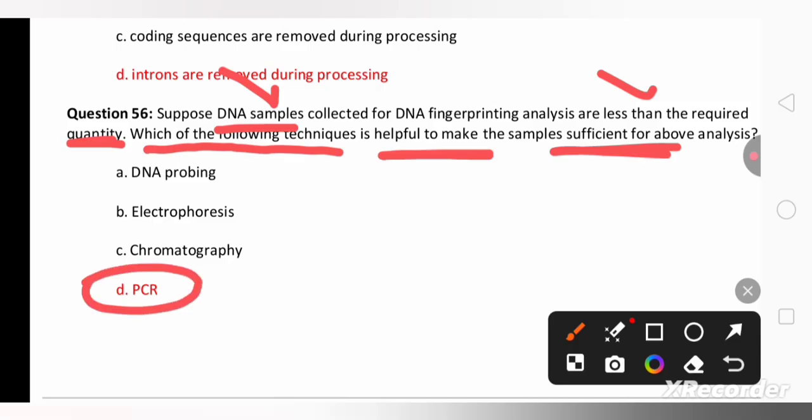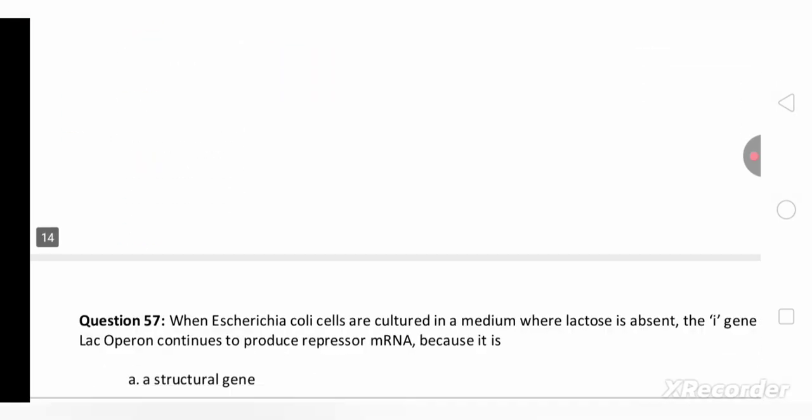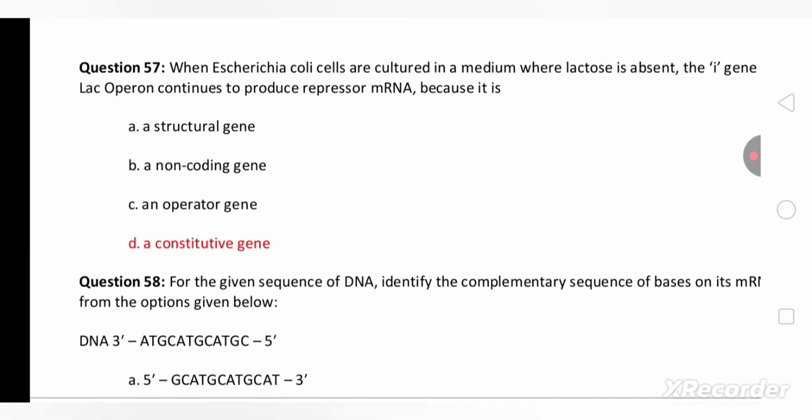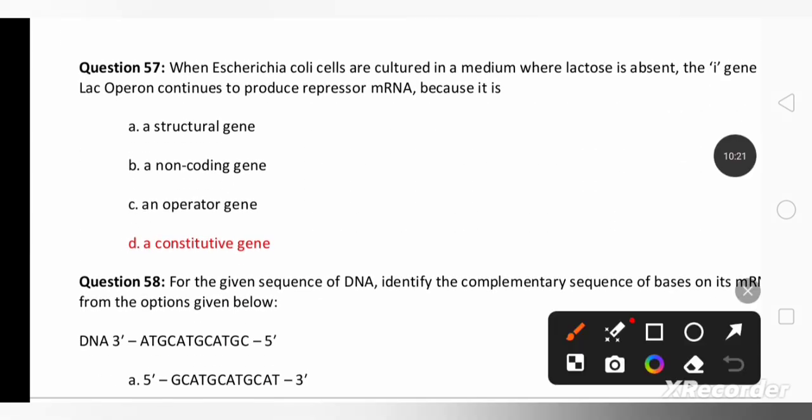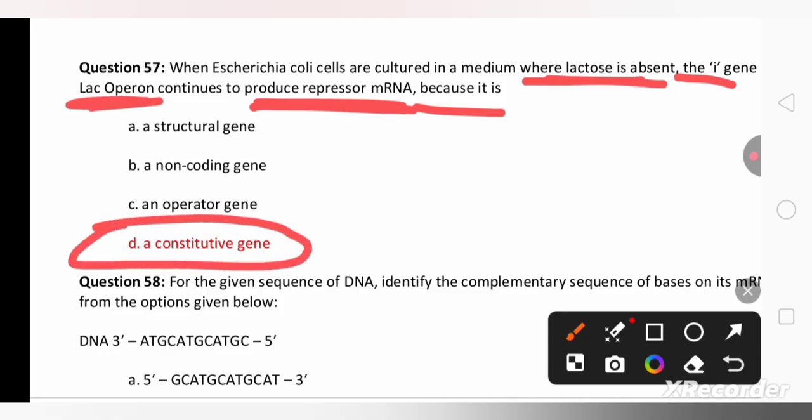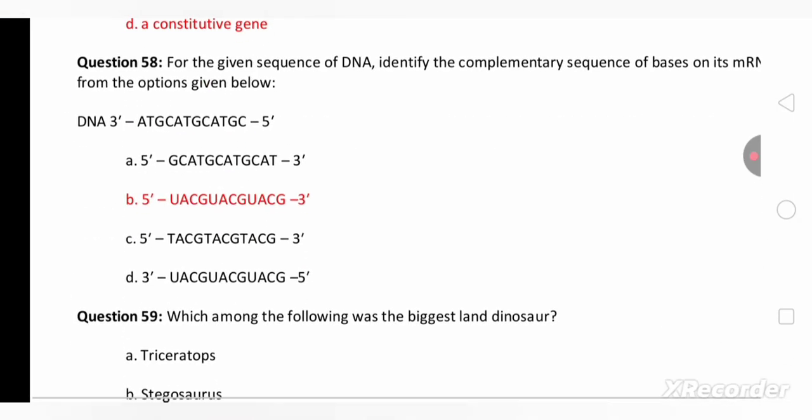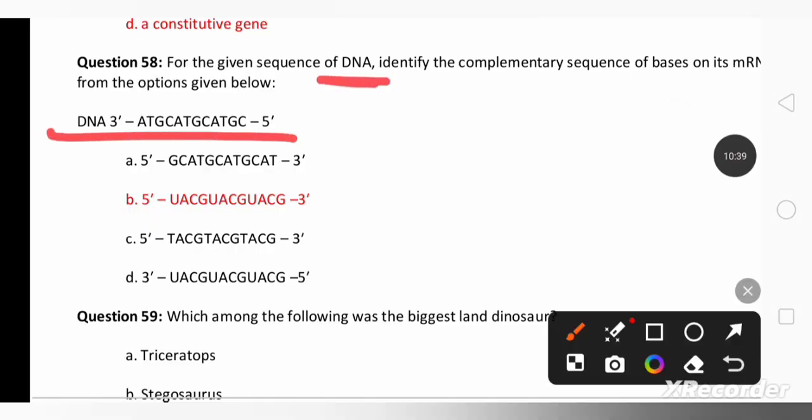When E. coli bacteria are cultured in the medium where lactose is absent, the i gene of lac operon continues to produce repressor mRNA because it's a constitutive gene. i is a constitutive gene.